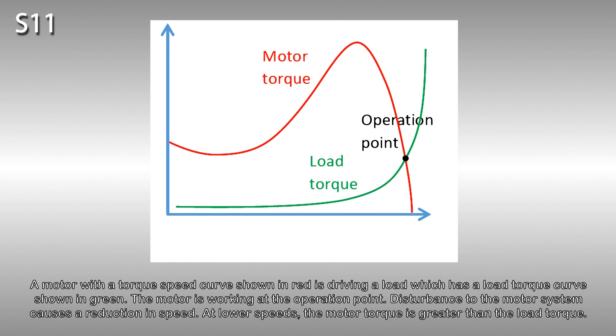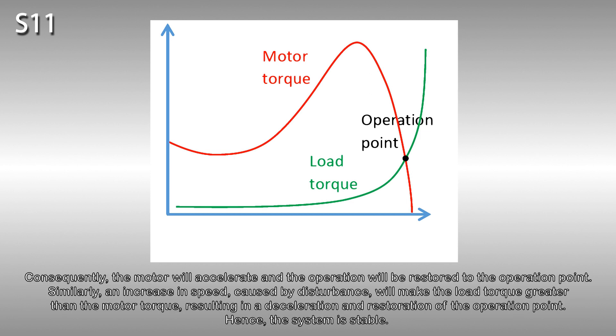A motor with a torque speed curve shown in red is driving a load which has a load torque curve shown in green. The motor is working at the operation point. Disturbance to the motor system causes a reduction in speed. At lower speeds, the motor torque is greater than the load torque. Consequently, the motor will accelerate and the operation will be restored to the operation point. Similarly, an increase in speed caused by disturbance will make the load torque greater than the motor torque, resulting in a deceleration and restoration of the operation point. Hence, the system is stable.